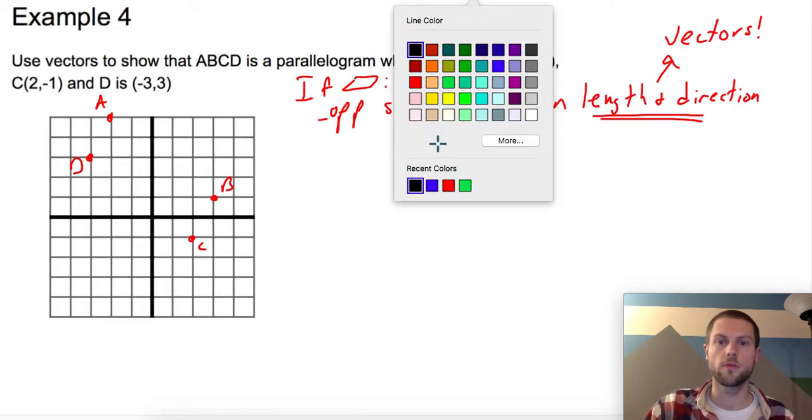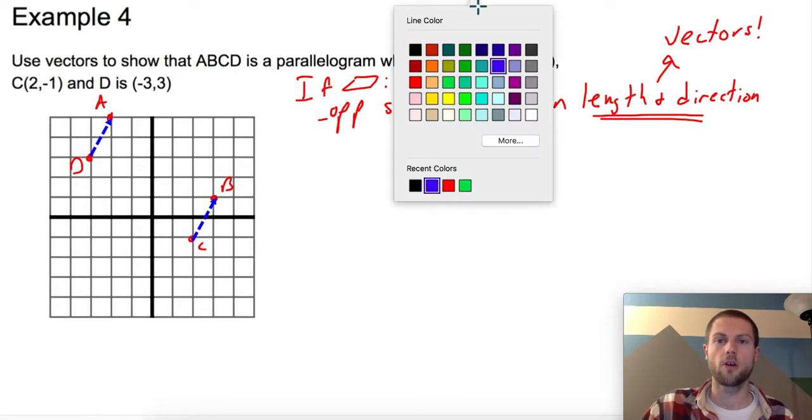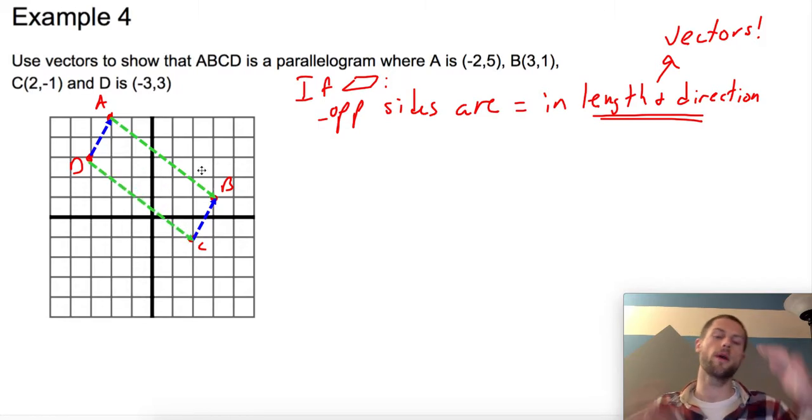So really what we're doing here is we're looking at pairs of vectors. So let's actually draw some vectors into this parallelogram. Let's draw a pair of vectors DA and CB. And let's draw a pair of vectors AB and DC. So if these colored pairs of vectors are the same, then it should be a parallelogram.